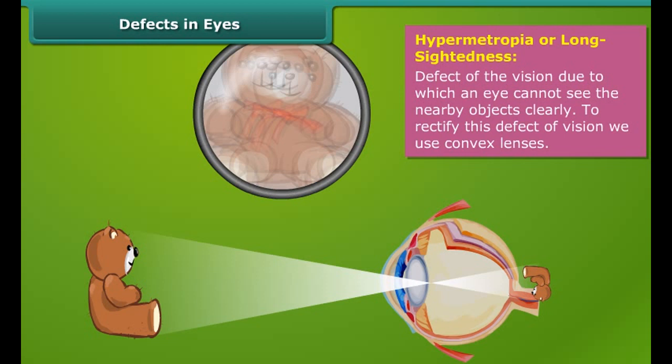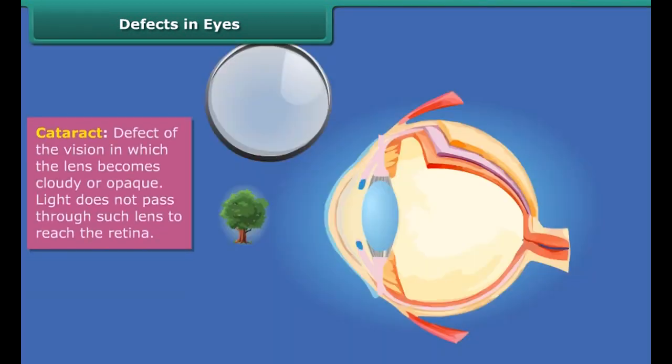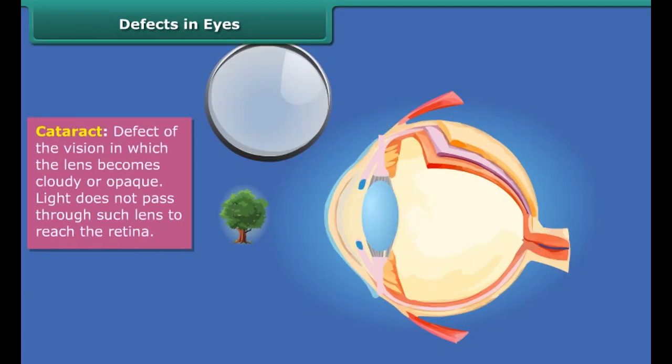Hypermetropia, or long sightedness, is a defect of vision due to which an eye cannot see nearby objects clearly. To rectify this defect of vision, we use convex lenses.